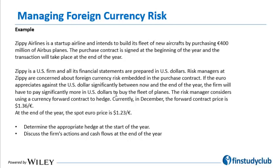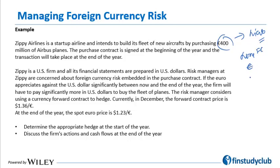If the euro appreciates significantly against the U.S. dollar between now and the end of the year, the firm will have to pay significantly more in U.S. dollars to buy the fleet of planes. The risk manager considers using a currency forward contract to hedge. Since Zippy has a liability — it has to pay in euros — it should go long euro on a forward basis. The forward rate for December is currently quoted at 1.36 dollar per euro.